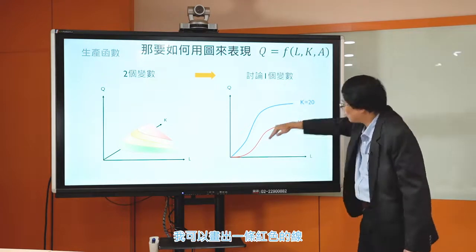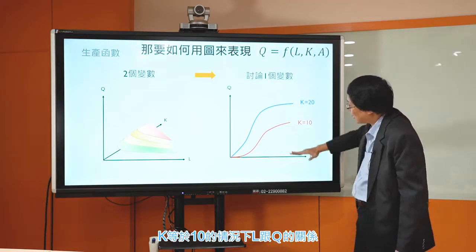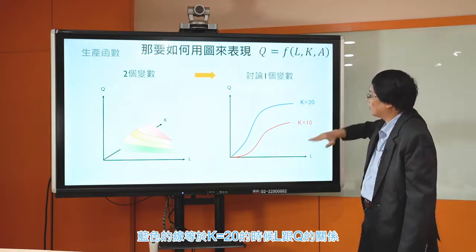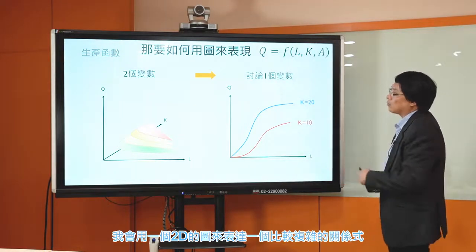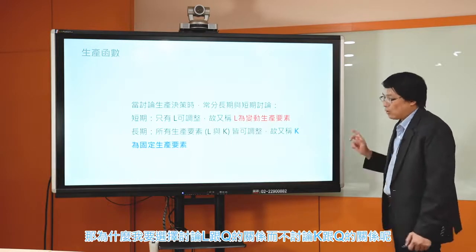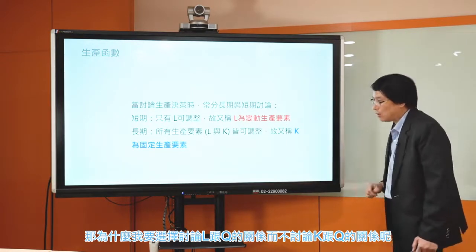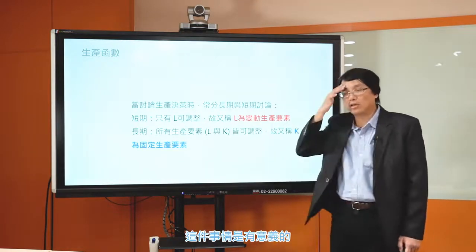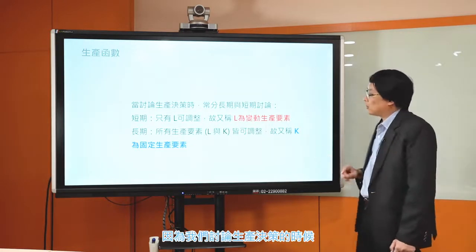在比較基礎的課程裡面，我們會把A當成是生產函數的一部分，就是它在表達L跟K怎麼樣形塑成產出，或是就不討論A加以簡化。在2D的圖裡面，紅色的線表示K等於10的情況下L跟Q的關係，藍色的線表示K等於20的時候L跟Q的關係。為什麼我要選擇討論L跟Q的關係而不討論K跟Q的關係呢？這件事情是有意義的。